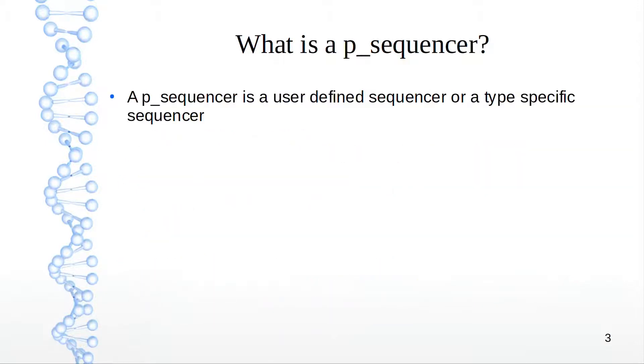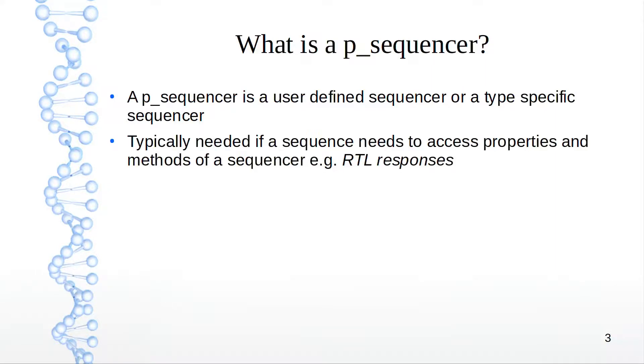So what is a p_sequencer? A p_sequencer is a user-defined sequencer or a type-specific sequencer. When do you need it? You need it if a sequence needs to access properties and methods of a sequencer.